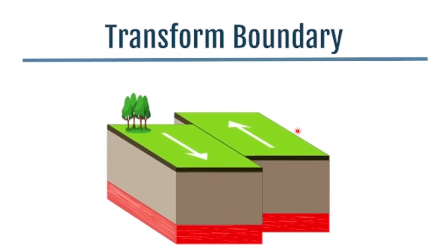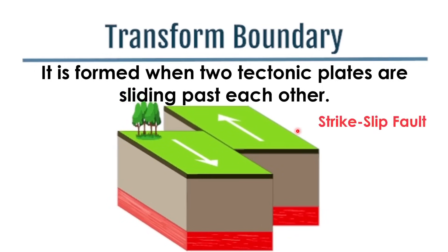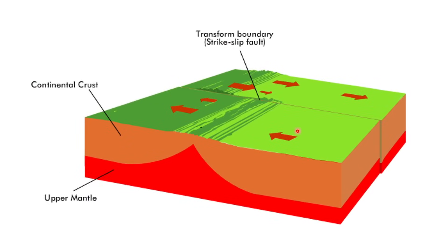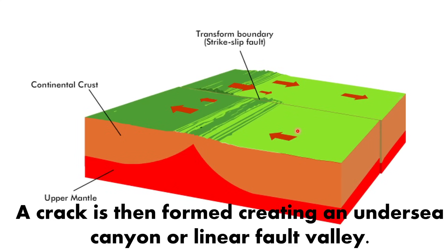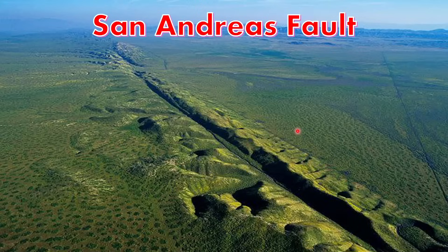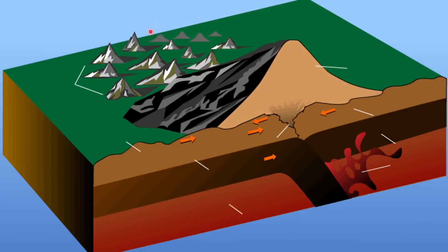Now let's talk about the third type: transform fault boundary. It is formed when two tectonic plates are sliding past each other, and it is also called a strike-slip fault. Rocks that line the boundary split into pieces as the plates slip past each other. A crack is then formed, creating an undersea canyon or linear fault valley. An example is the San Andreas Fault in California, where the Pacific plate and the North American plate slide past each other. Understanding these boundaries helps explain why certain areas are more prone to earthquakes, volcanic activity, and mountain formation.